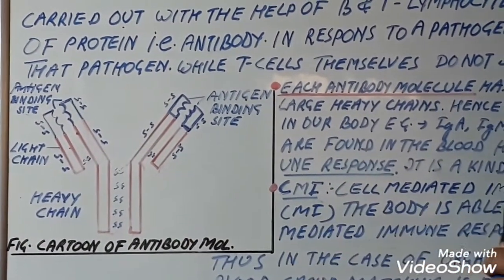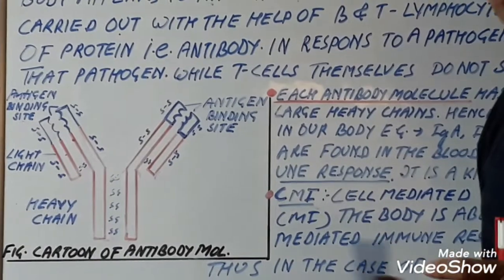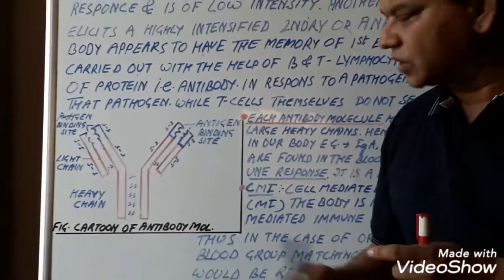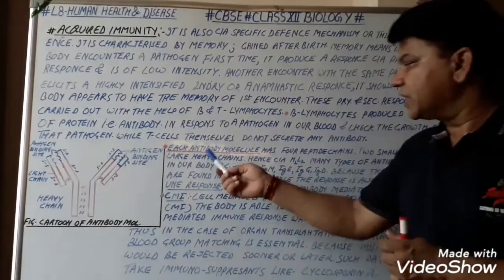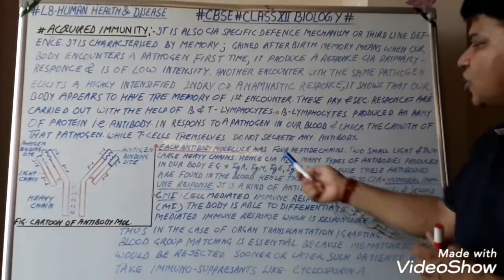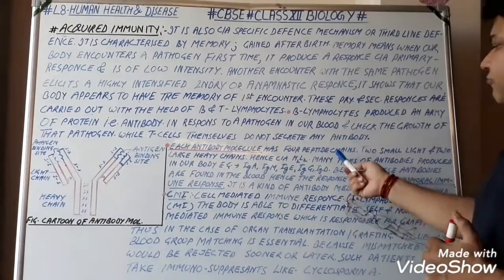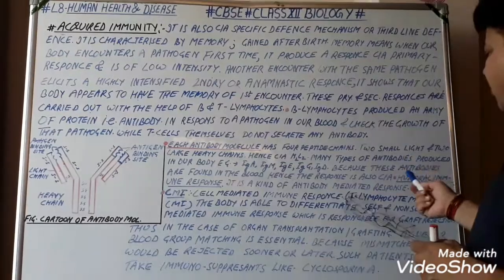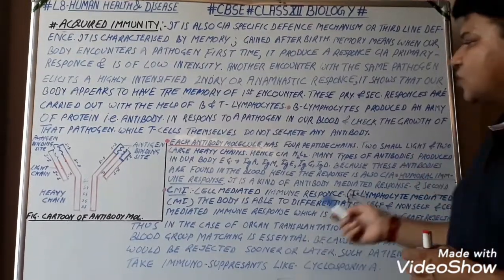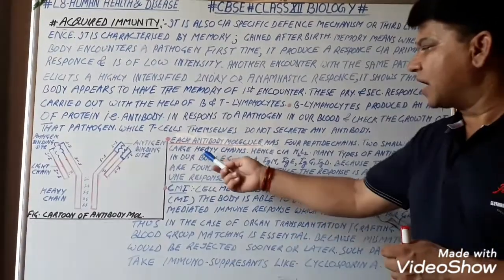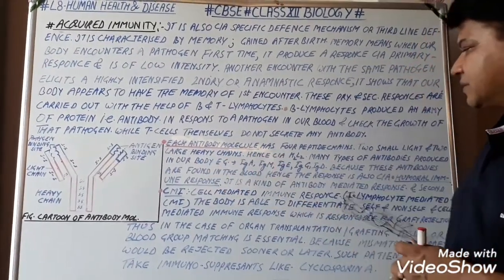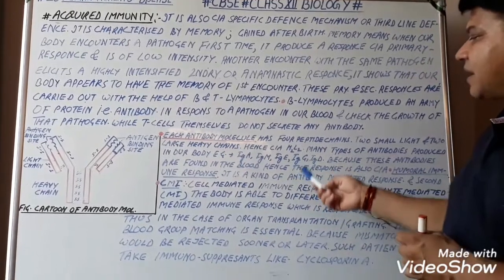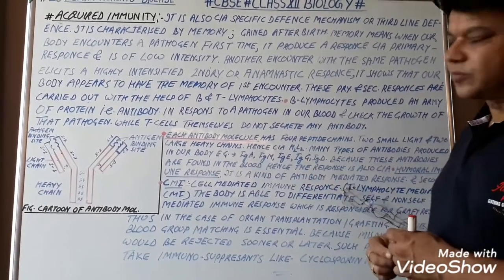Looking at the detailed structure of the antibody: each antibody molecule has four peptide chains — two small light chains and two large heavy chains — hence it is called H2L2.